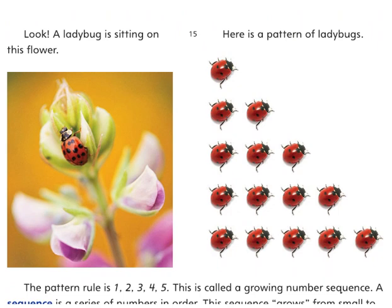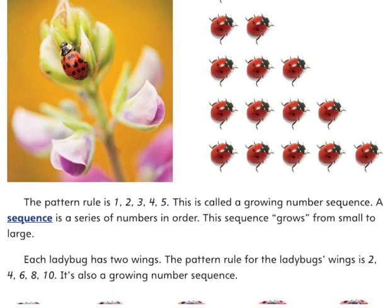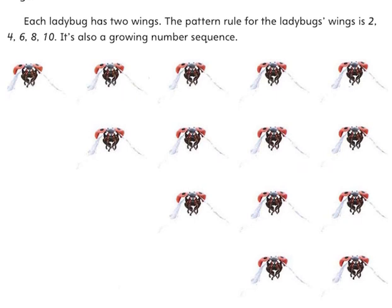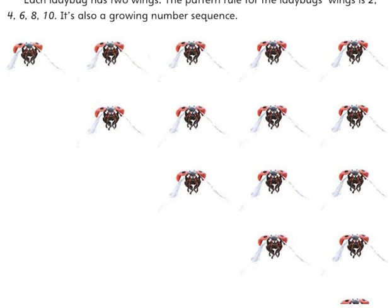Look — a ladybug is on this flower. Here is a pattern of ladybugs. The pattern rule is 1, 2, 3, 4, 5. This is called a growing number sequence. A sequence is a series of numbers in order, and this sequence grows from small to large. Each ladybug has two wings. The pattern rule for the ladybug's wings is 2, 4, 6, 8, 10 — it is also a growing number sequence.